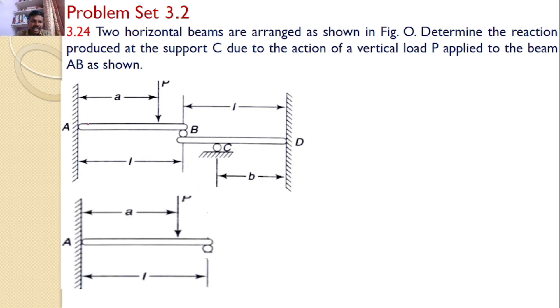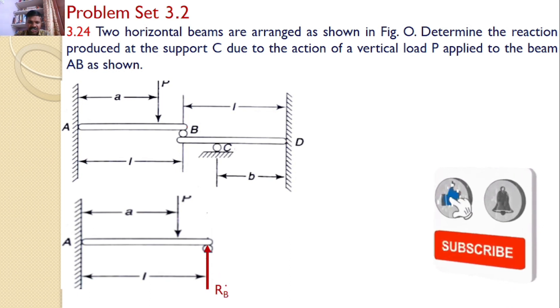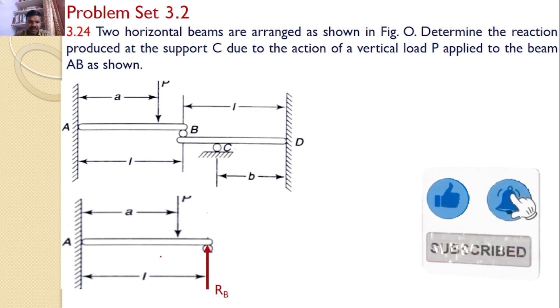Now first I am redrawing beam AB. Here I can find there is a roller support. Roller support will introduce a vertical reaction. Let that vertical reaction be RB. Now here there are some reactions but I am taking moments about point A, so both horizontal and vertical reactions need not be considered.